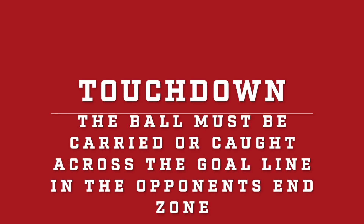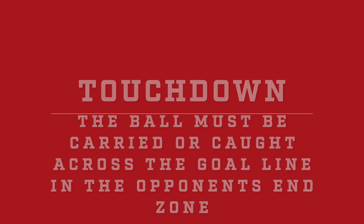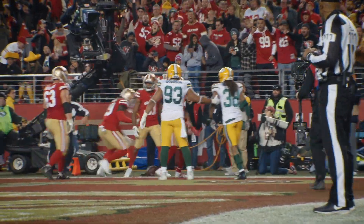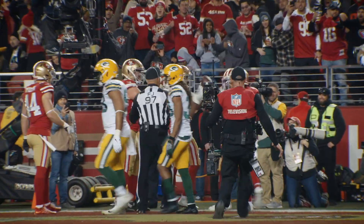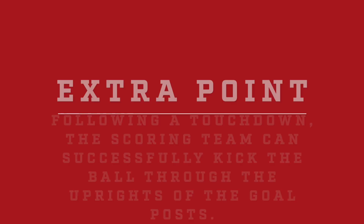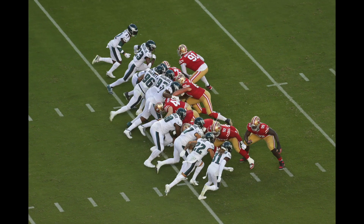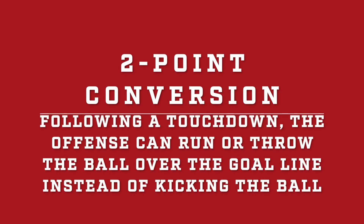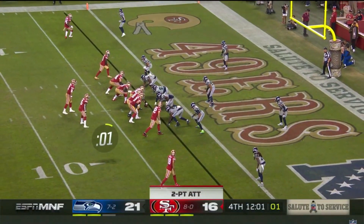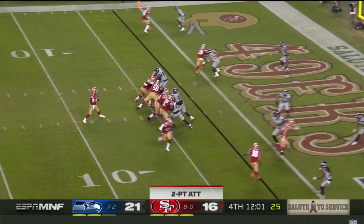The first term we're going to go over is a touchdown. A touchdown is worth six points and the team with the ball — the offense — must carry or catch the ball in the opposing team's end zone to score six points. For one extra point following a touchdown, the scoring team can choose to kick the ball between the uprights of a field goal post. Or for two points, the scoring team can choose to run or throw the ball over the goal line at the end of the end zone. This means the scoring team will have to get past their opponent's defense, which is a lot harder than it sounds.